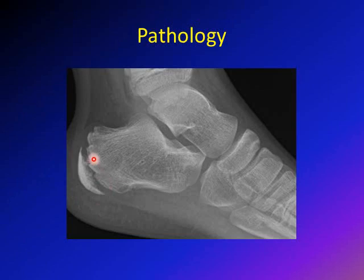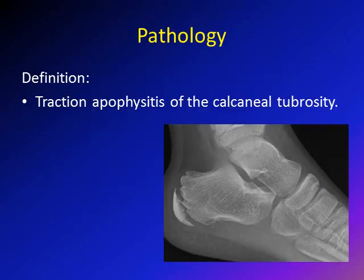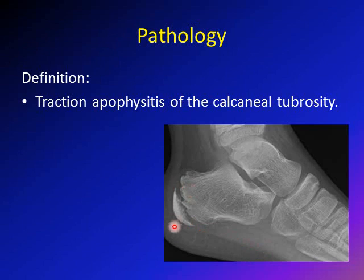Severs disease happens in the calcaneal apophysis. The exact pathology is not known for sure. Most people think it's a traction injury of the calcaneal apophysis — it is subjected to lots of stress through the Achilles tendon by the gastrocnemius muscle and through the plantar fascia. This causes microtrauma to the calcaneal apophysis, and some people think it may progress to the level of a stress fracture.